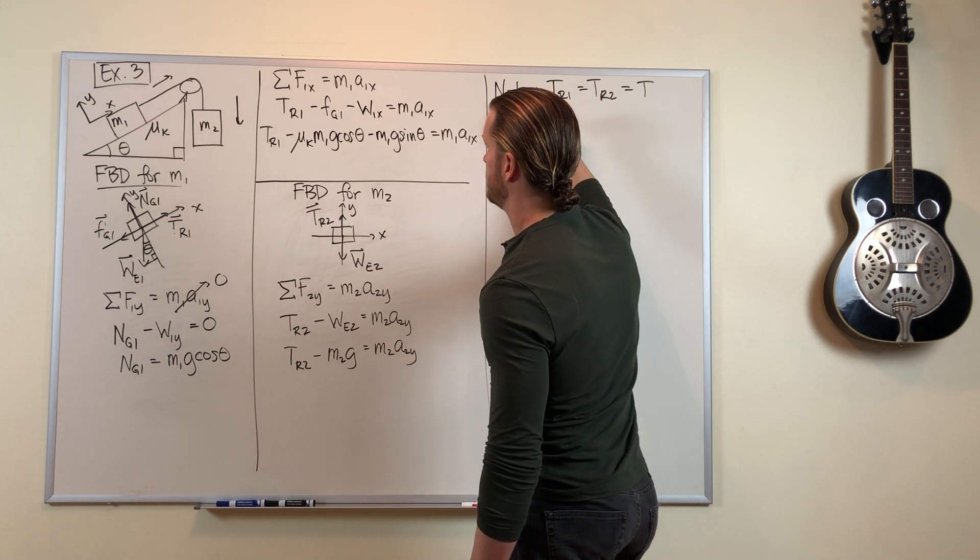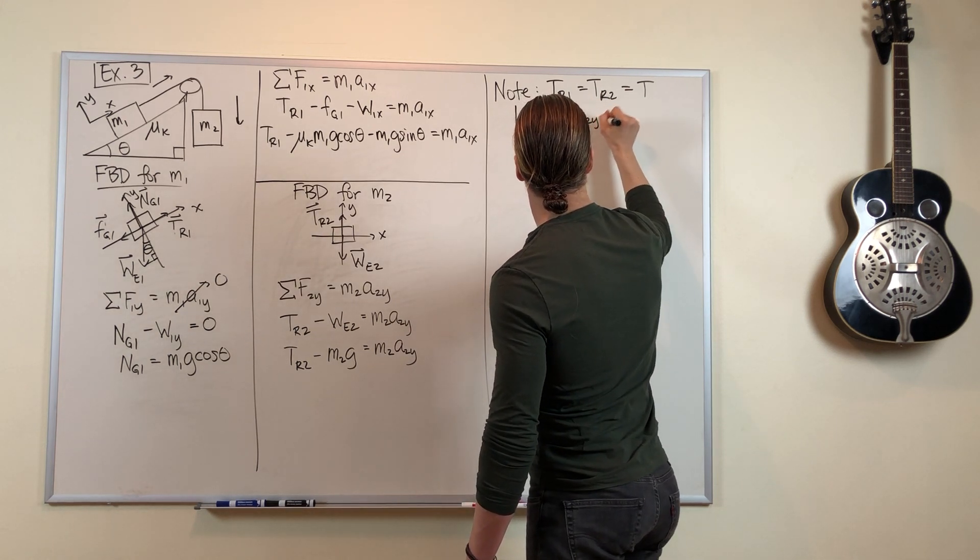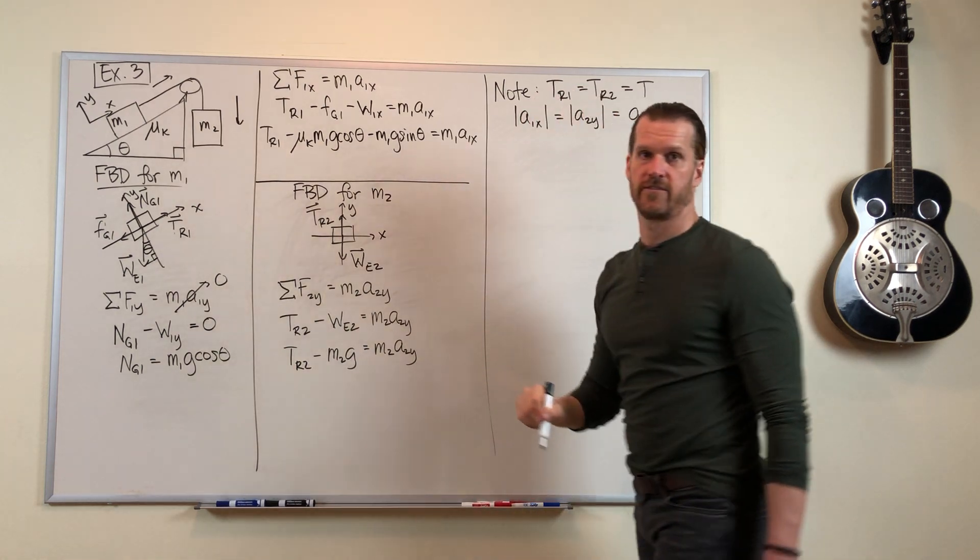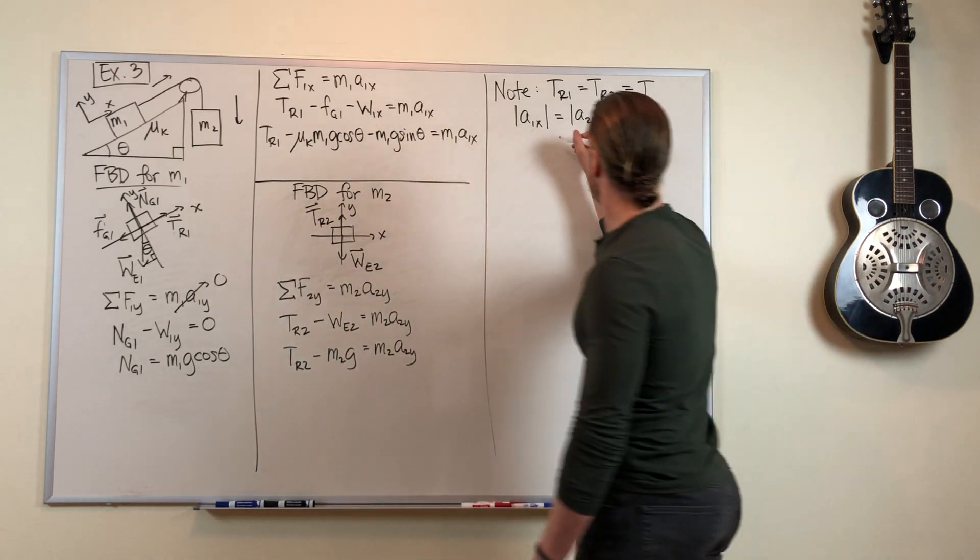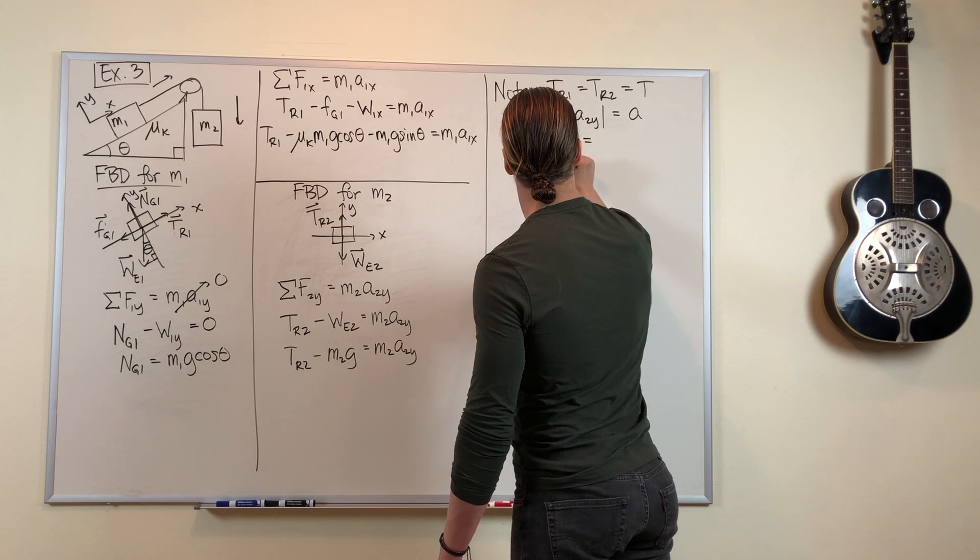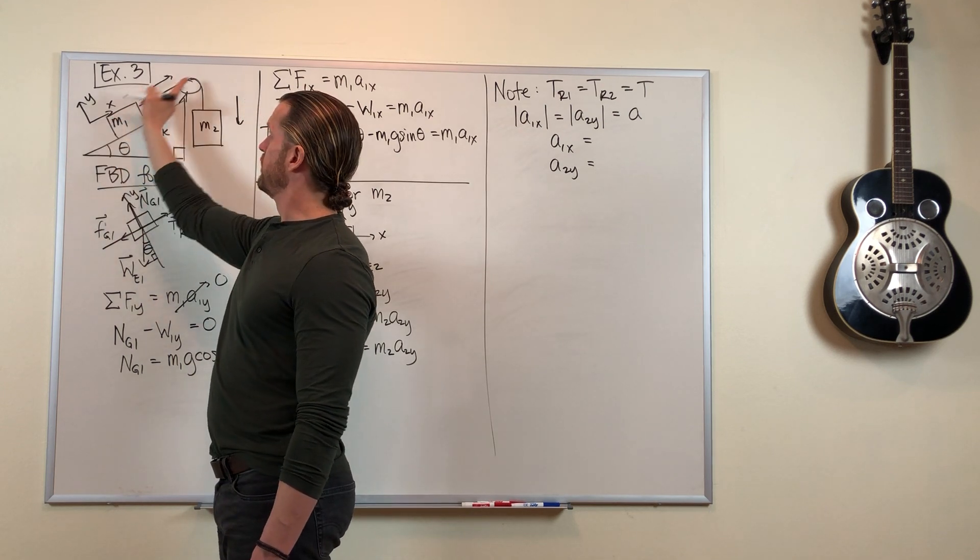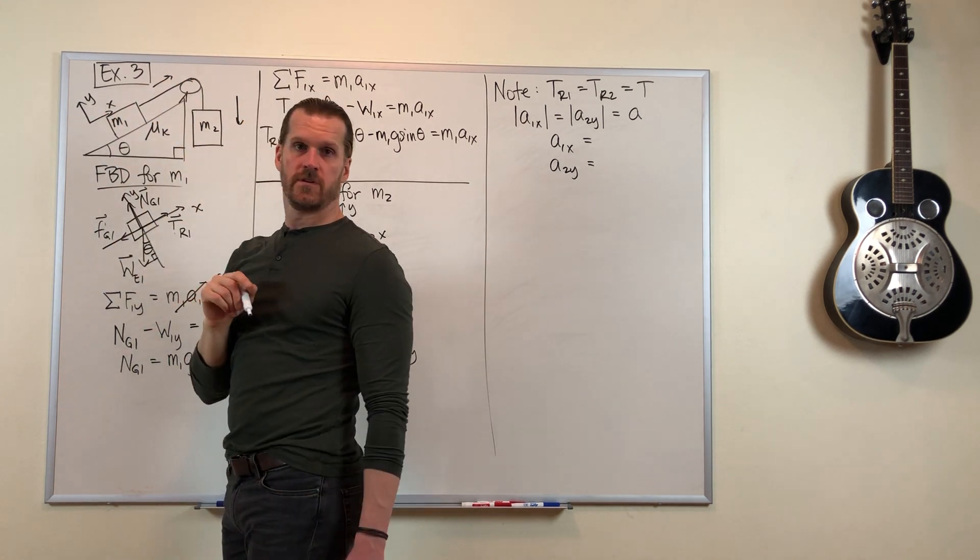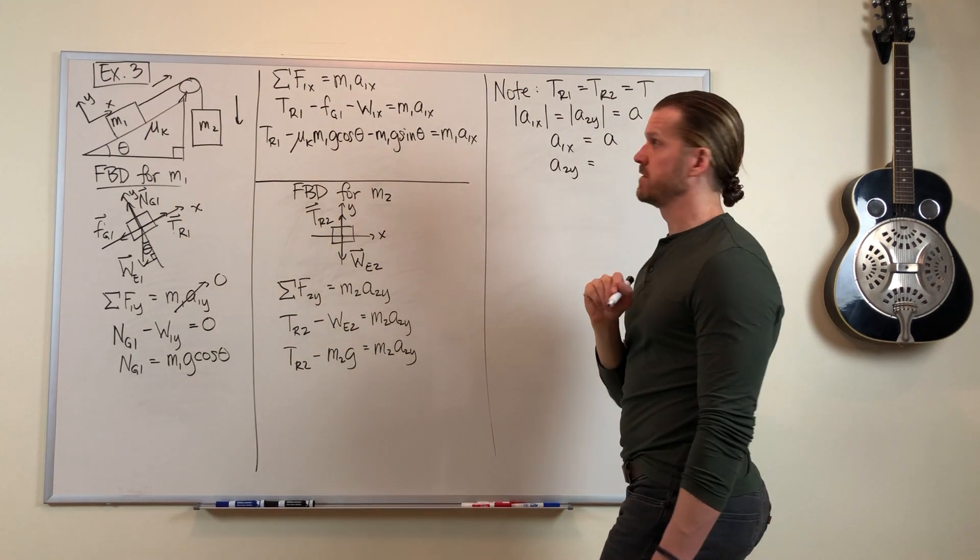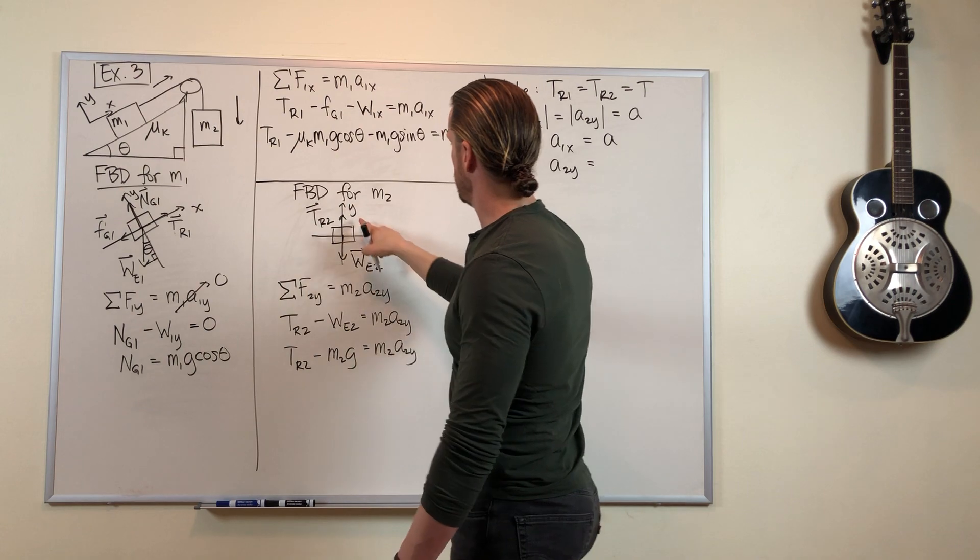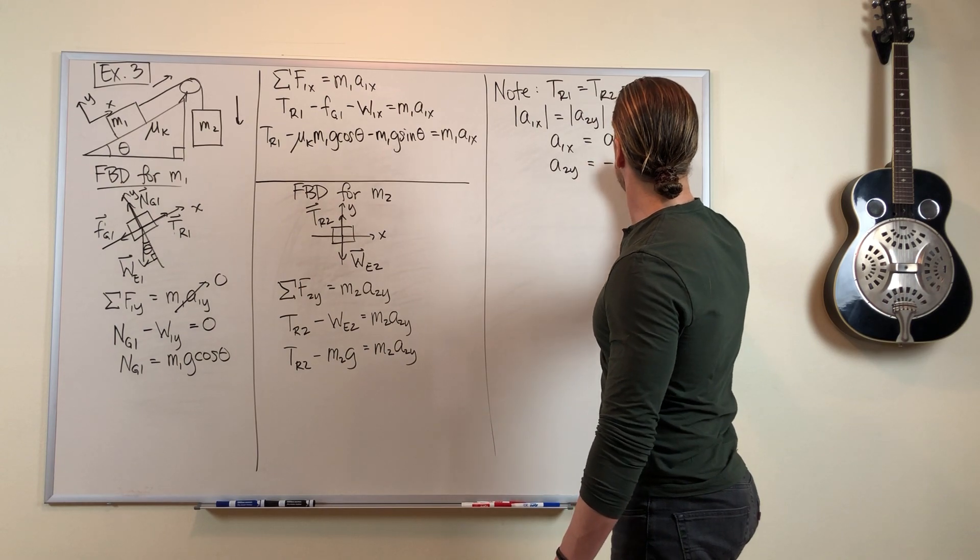Now, the acceleration has the same magnitude for both objects. But we need to think about the coordinate systems we drew to give these the right signs. Mass one is moving up the slope. The coordinate system we drew had up the slope being positive x, so that's positive. Mass two is falling down. And the coordinate system we drew down is the negative y-direction, so that gets a negative sign.